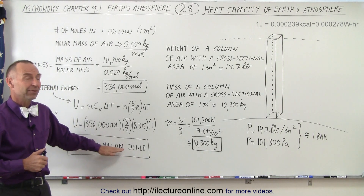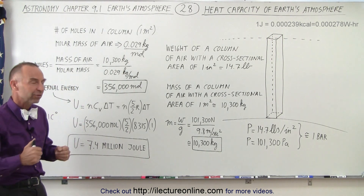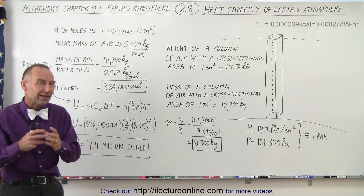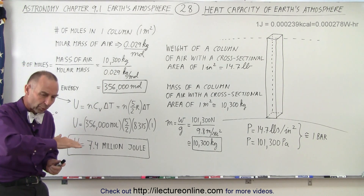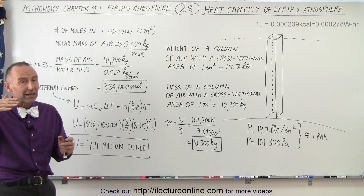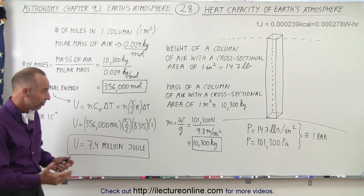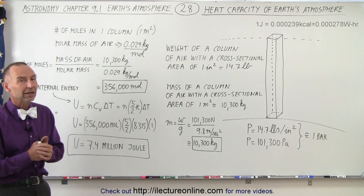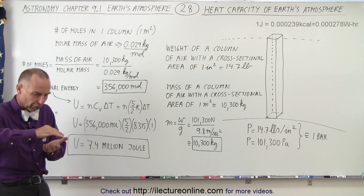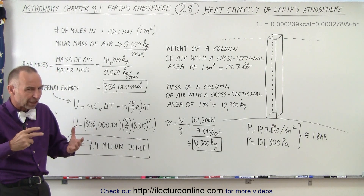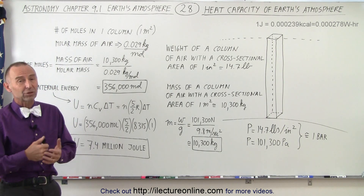So for a 10-degree increase, it would be 74 million joules of energy required to raise the temperature by 10 degrees Celsius. That's what we mean by the heat capacity of the atmosphere. Using this information, we're going to try to figure out why the temperature rises in the morning, why it cools down in the evening and throughout the night, and then starts up again the next day. One key factor is the heat capacity of the air — it takes in energy from the surface and then slowly radiates it out into space. Stay tuned and we'll get you more information about how that actually works.